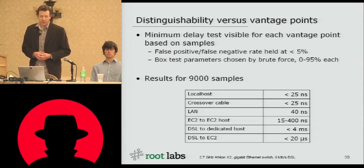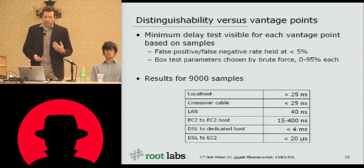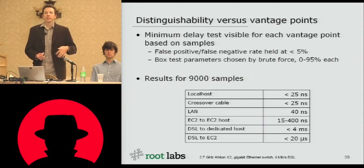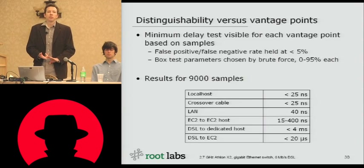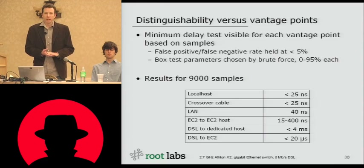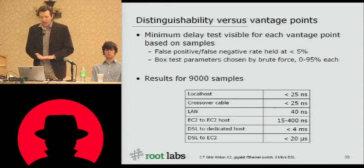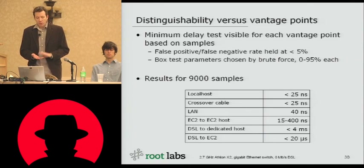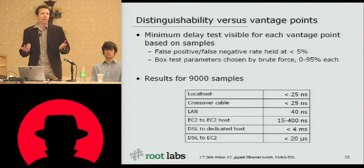The EC2-to-EC2 numbers were the highest and most varying. We were able to resolve reliably down to 15 nanoseconds for repeated data sets, but only at certain times — we think due to scheduling on the same host, competing loads, or something similar. That value had the most variance. However, when it was good, it was very good — even better than some of our LAN measurements. So we think Amazon must have some really nice networking hardware.